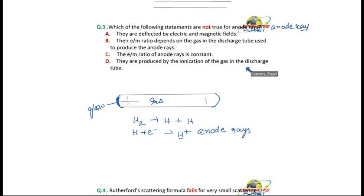They are produced by ionization of the gas in the discharge tube. That is also correct. So which is the false statement here?